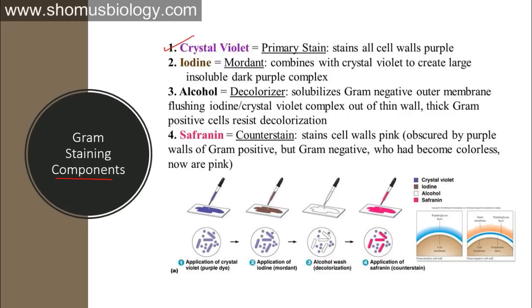The second component is iodine, which acts as a mordant — it combines with crystal violet to create a large, insoluble, dark purple complex. The third component is alcohol, acting as a decolorizer: it dissolves the gram negative outer membrane and flushes the iodine–crystal violet complex out through the thin wall, while thick gram positive cell walls resist this decolorization. This decolorization step is the most critical part of the staining process.